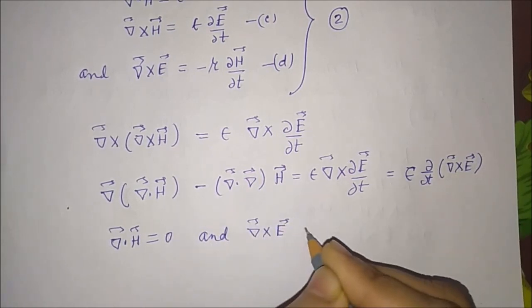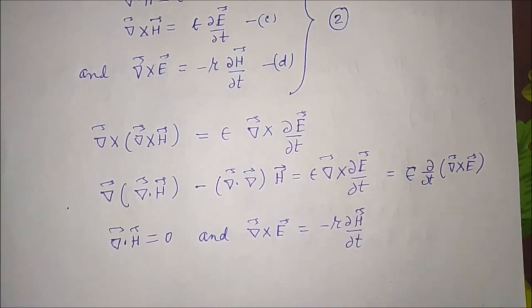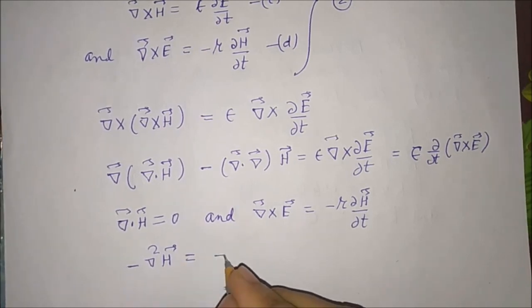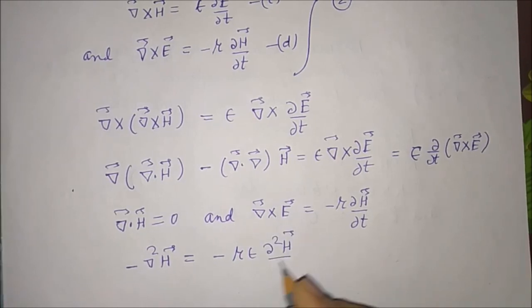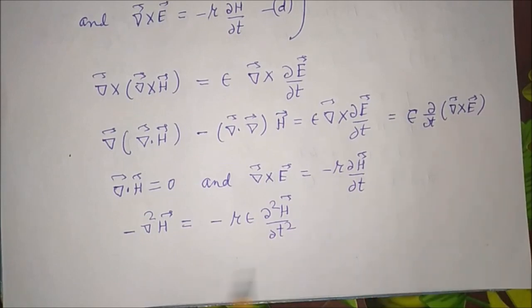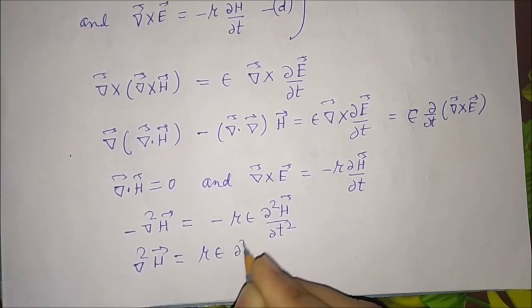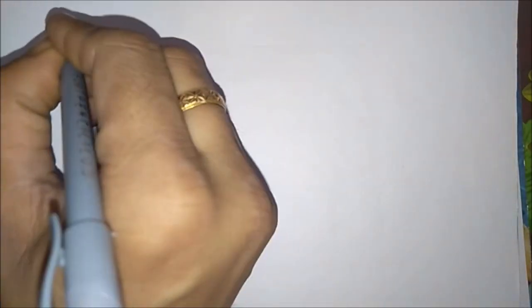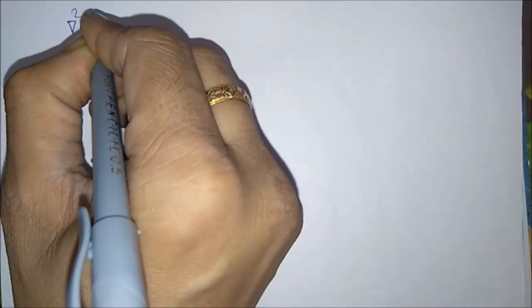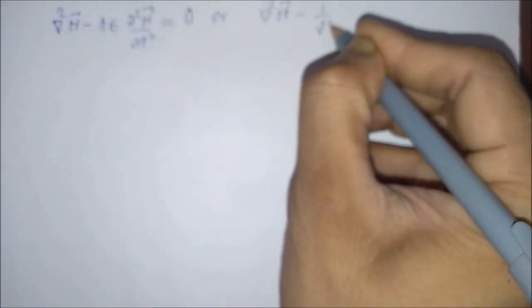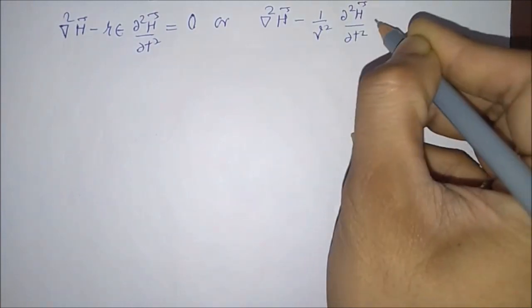And using curl of E equal to minus mu ∂H/∂t, we get minus del squared H equal to minus mu epsilon ∂²H/∂t². This gives del squared H minus (1/v²) ∂²H/∂t² equal to zero. Let us name this equation number A.